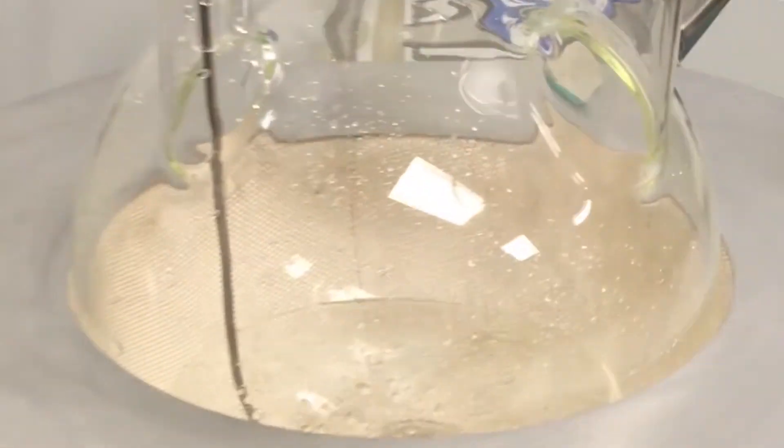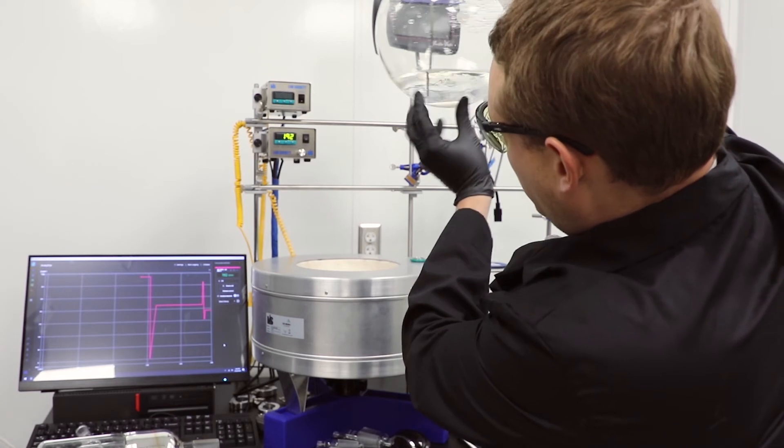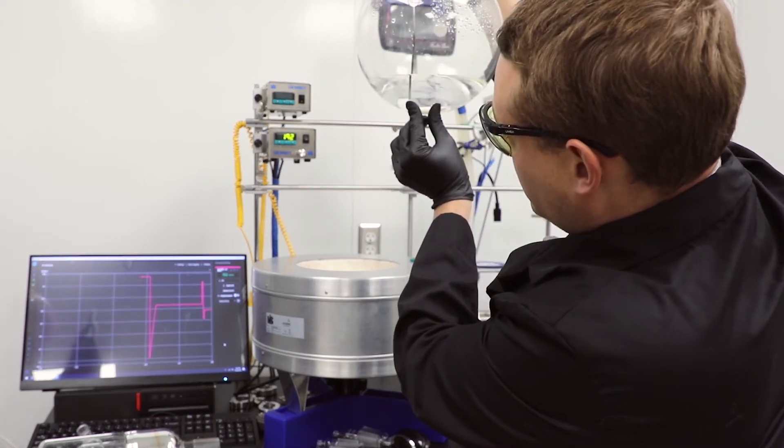We're watching over here as this stir bar flails around because it got hit by the thermocouple. Now that we actually can see and we are in a good spot, our thermocouple probe is very deep in the solution if we look at it from this way. We're super close to the bottom here and we're not touching the glass.